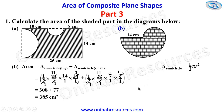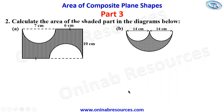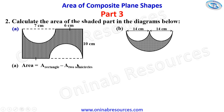We are done with Problem 1 and move to Problem 2: calculate the area of the shaded part in the diagrams below. For diagram A, the area is the area of the rectangle minus the area of the two semicircles. Luckily the two semicircles have the same diameter, so we join them to form a complete circle. The area is therefore the area of the rectangle minus the area of the complete circle. The length of the rectangle is 13 plus 10.